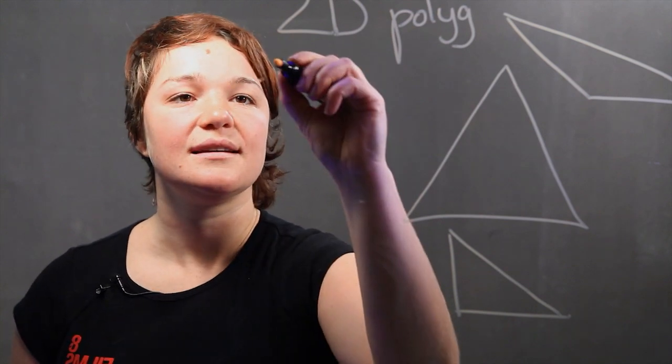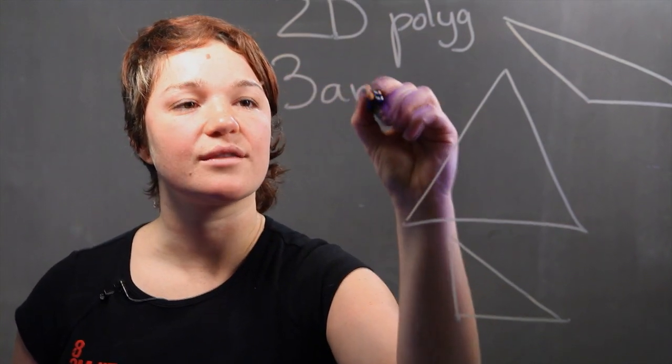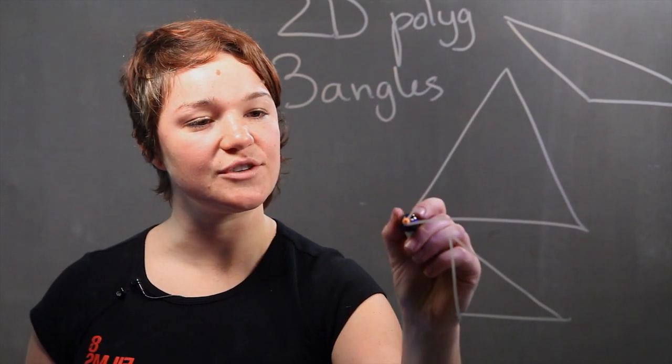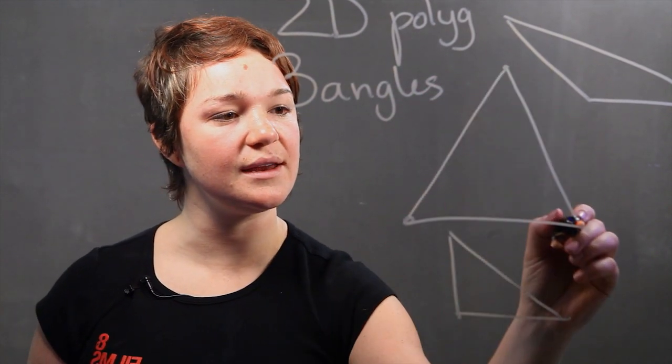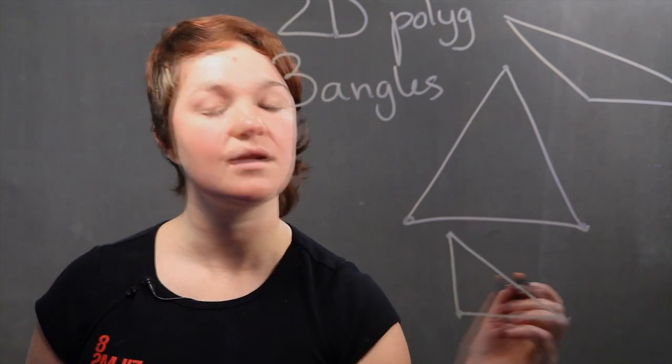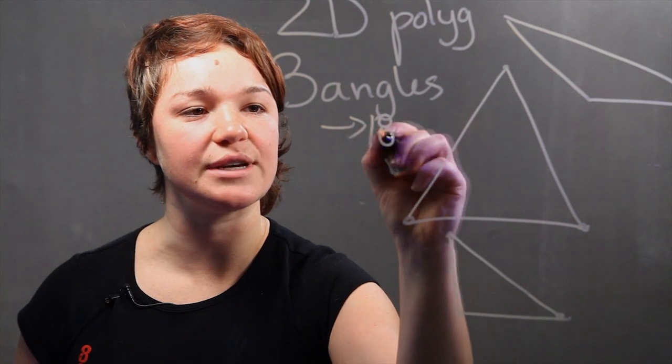Secondly, a triangle always has three angles. And these three angles, such as seen here, here, and here, or here, here, and here, they always add up to 180 degrees.